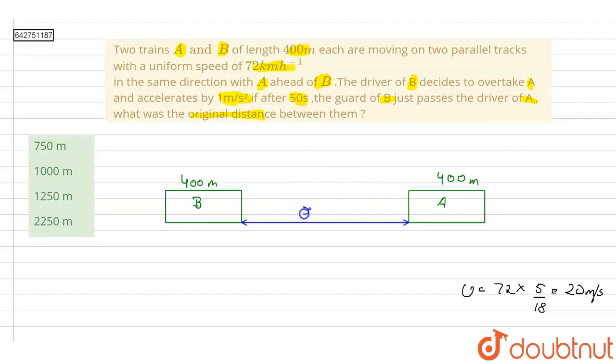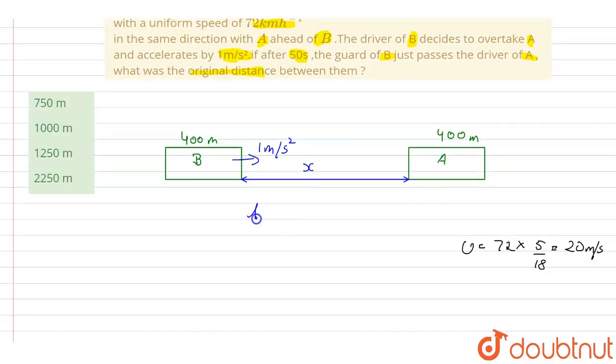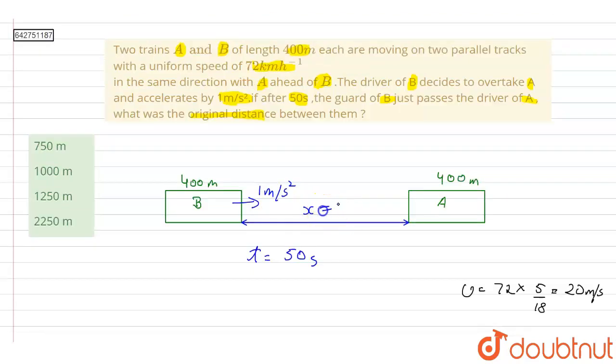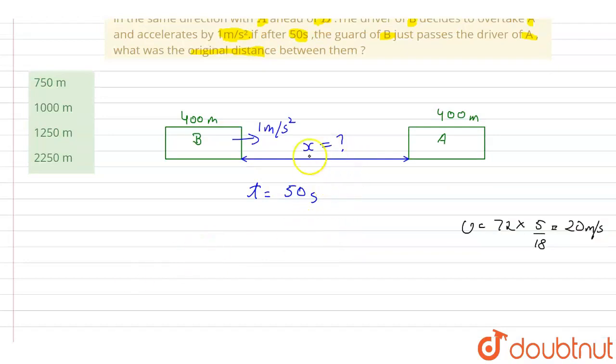Now what happens is driver B tries to accelerate with 1 meter per second squared and tries to pass over the train A. The time taken to cover this distance is given as 50 seconds, so we have to calculate x.